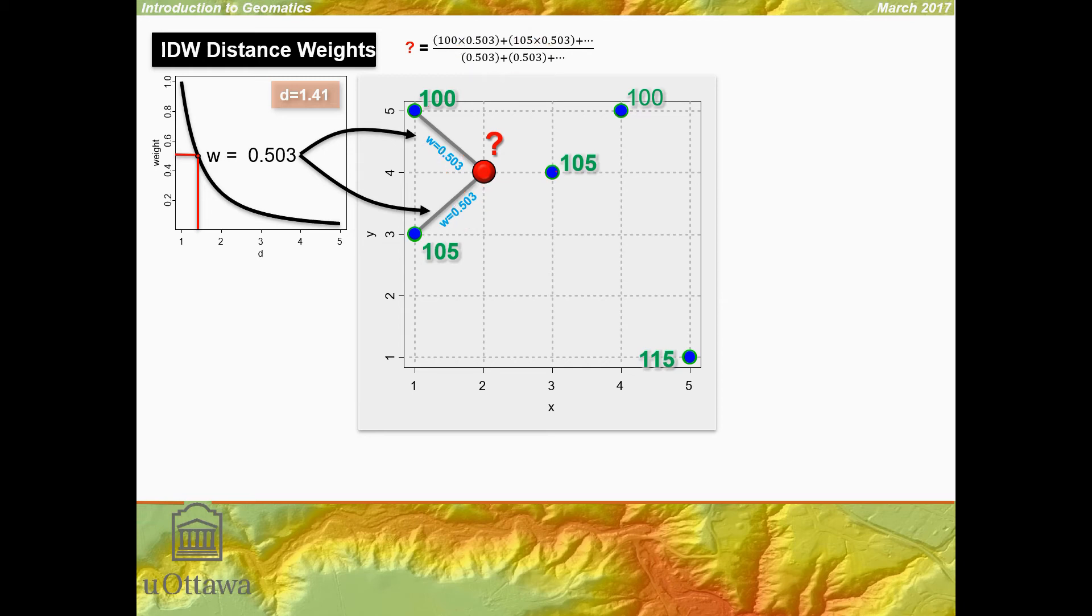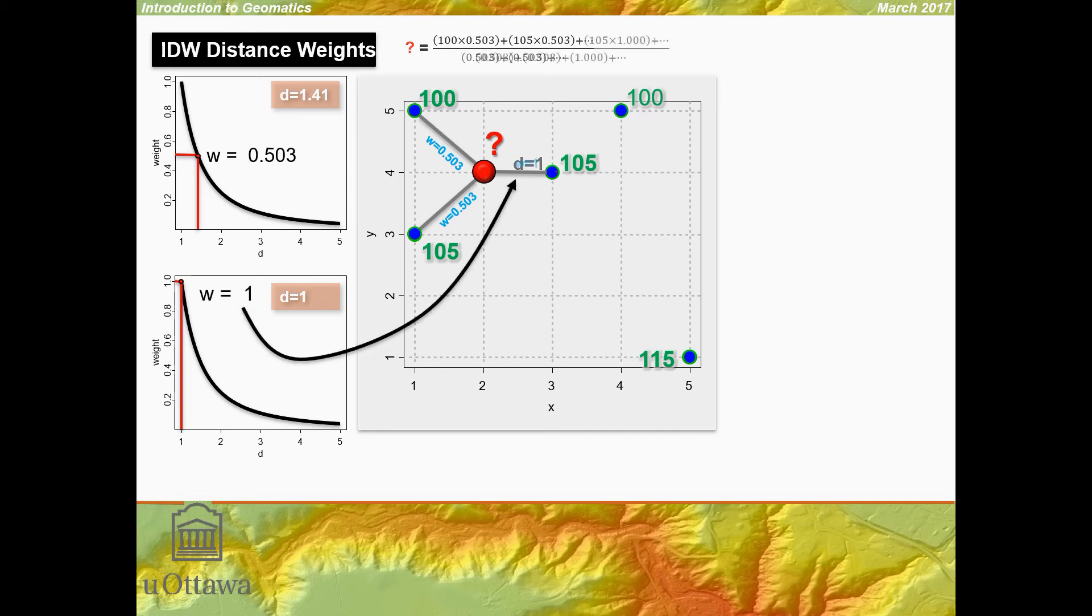Then we get the next point. 105 has a distance of 1. We draw a graph with the same inverse distance squared weighting and find that we have 105 times 1. At one distance unit, the weight is 1. So 105 times 1 divided by 1. We're just adding terms to our numerator and denominator.